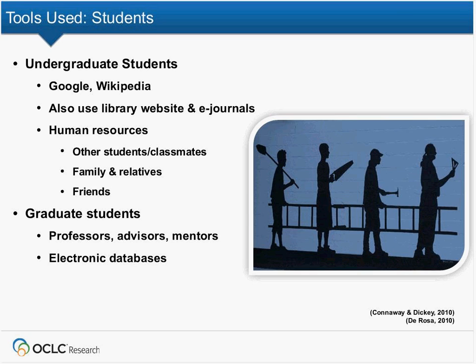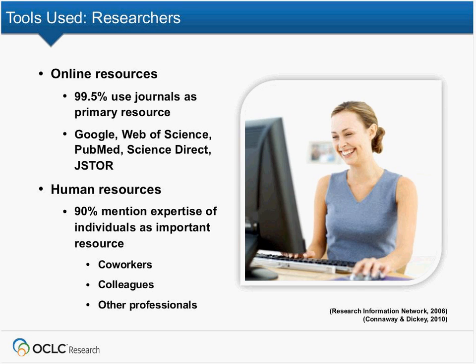Graduate students, professors, advisors, mentors — and they mention electronic databases. Researchers talk about Google, Web of Science, JSTOR. JSTOR comes up a lot. One man told me: 'I couldn't find anything and a librarian helped me and showed me something called JSTOR. I got what I needed. Now every time I have a question, I go to JSTOR.' It's that teachable moment. JSTOR isn't the perfect place for all his research needs, but it worked once and it's going to work again. As one of my colleagues says, if you have a hammer, everything looks like a nail.